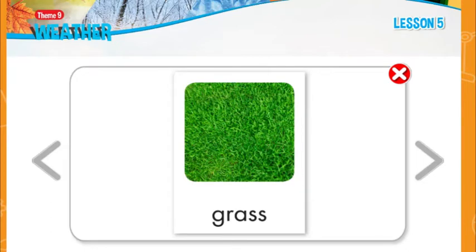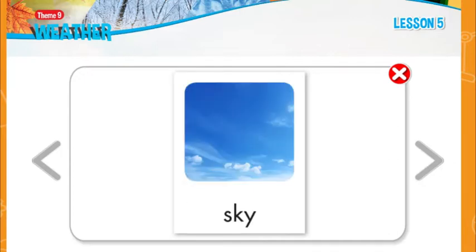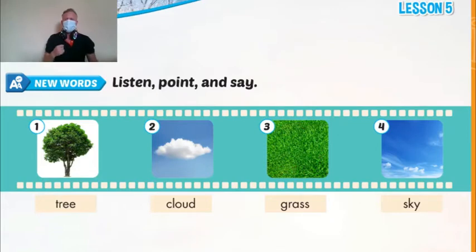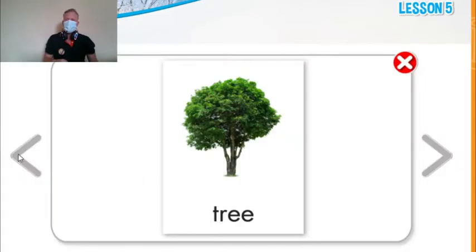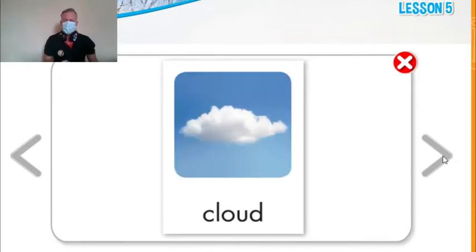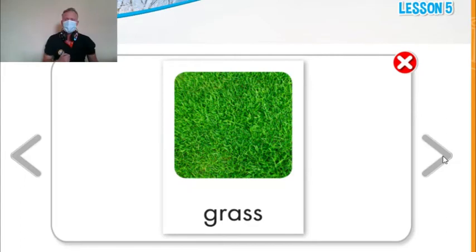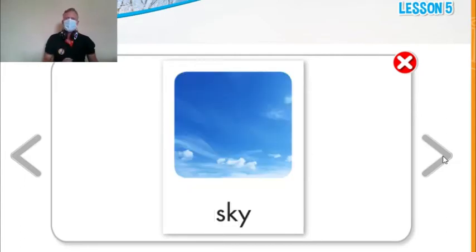Grass. Sky. Okay, let's go over them one more time. Number one is tree. Then we have cloud, grass and sky. Yes, sky. That's right.